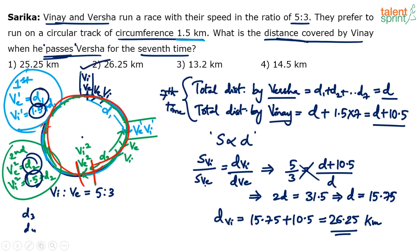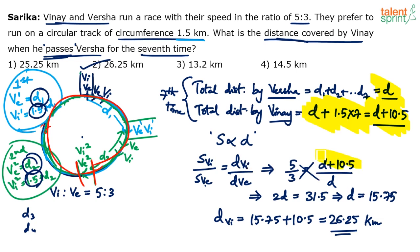So the answer is 26.25 kilometers — option 2. The explanation took time because we covered everything in detail. Next time you encounter this type of problem, you can directly write: distance covered by one person is D, the other is D + (circumference × number of passings), then use the speed ratio to find D.